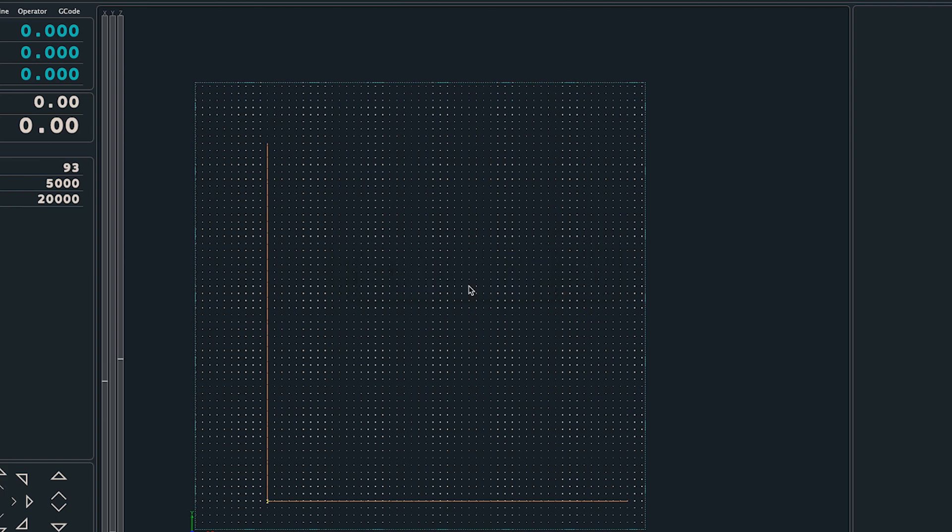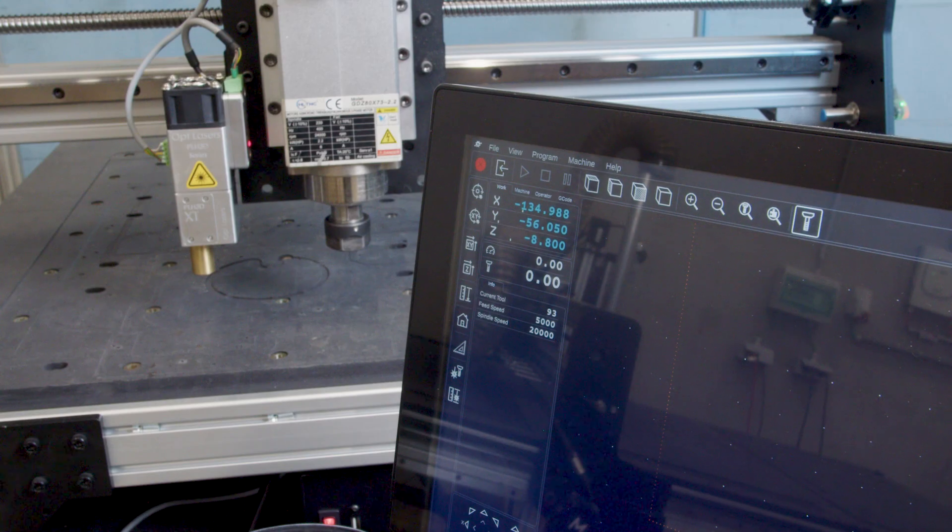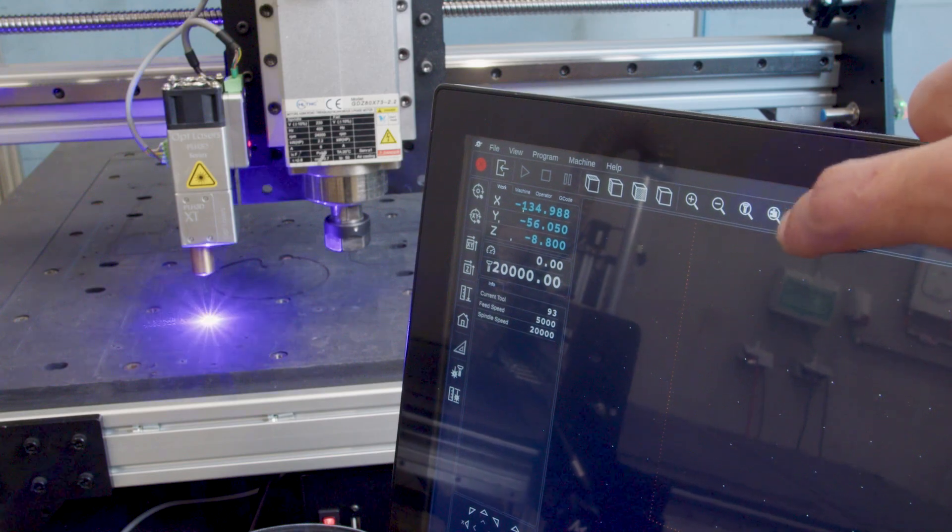Now that the laser tool is selected, pressing the spindle icon will pause the laser instead of the spindle.